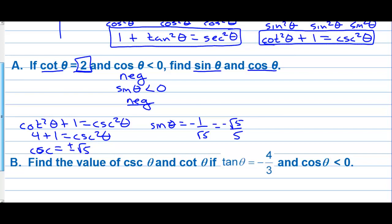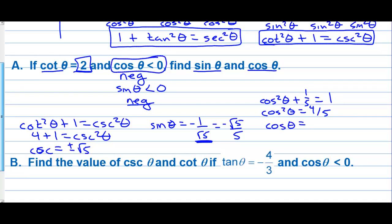Now, in order to get cosine, we use cosine squared theta plus sine squared theta equals one. Sine squared is one-fifth, so cosine squared theta equals four-fifths. Since cosine is negative, cosine theta equals negative two over the square root of five, which is negative two square root of five over five.